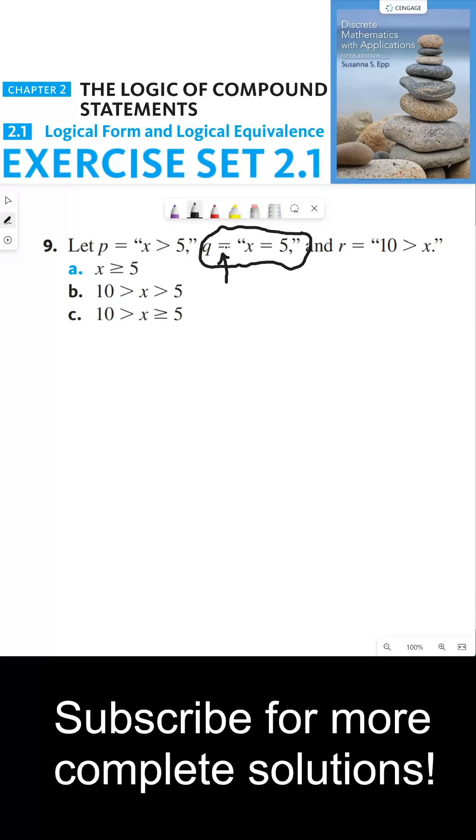Put another way, this equal symbol here is a definition of q. This is saying we're going to define q to be a statement, and that statement is that x equals 5, that x and 5 are the same objects. So the statement that x and 5 are the same, that statement is q. So I just wanted to clarify that.